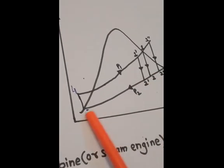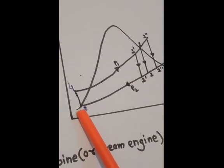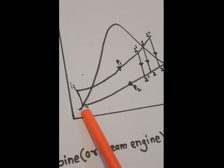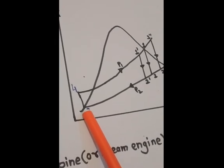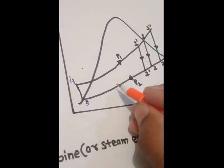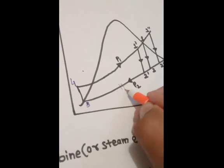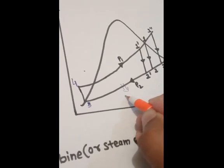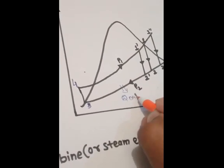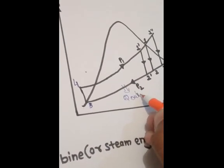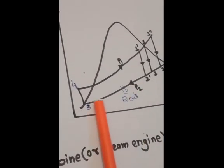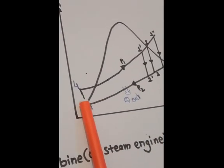From 2 to 3, both entropy and enthalpy decrease due to the rejection of heat out from the condenser.